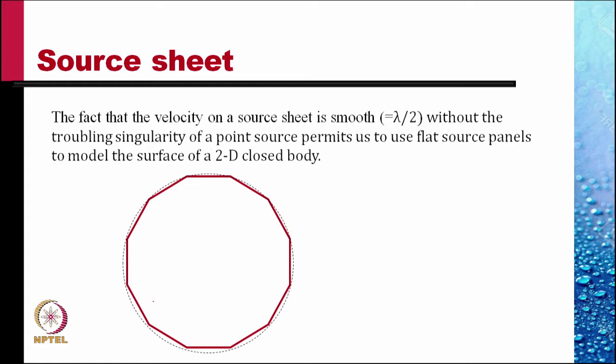Once we assume a strength for this panel, we can calculate the effect of those sources from each of these panels to points at the center of the panels and make the flow velocity tangent.